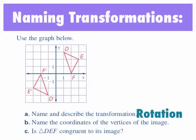B says name the coordinates of the vertices of the image. Remember we just said image is the one that has been moved, so after the rotation, that is the image. The pre-image is the original, so the pre-image is DEF. The image is D prime, E prime, F prime. The coordinates of the vertices: we have F prime at negative 2, 0, E prime at negative 3, negative 2, and D prime at negative 1, negative 3.